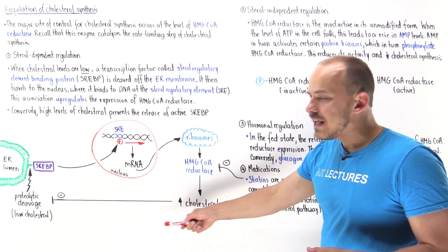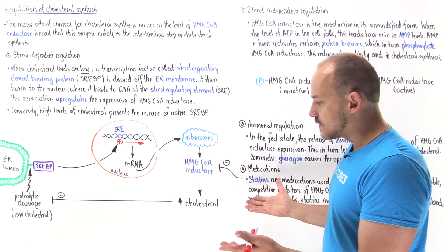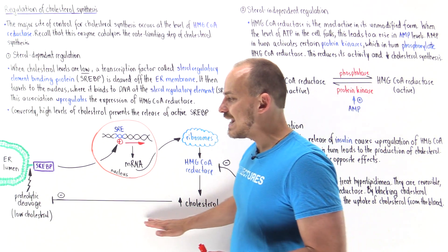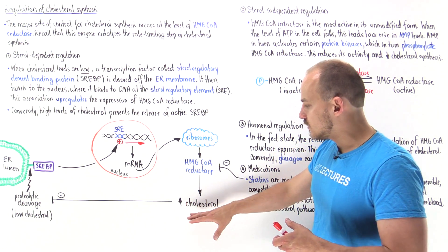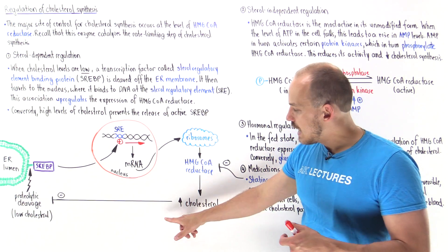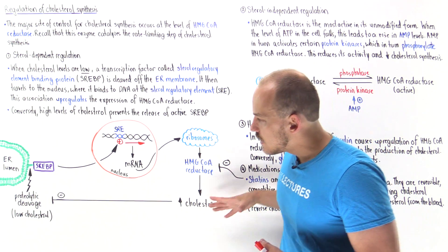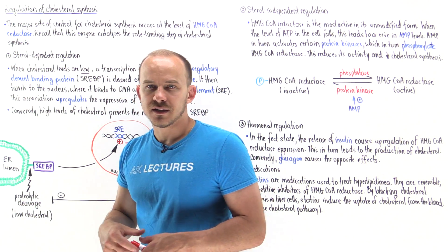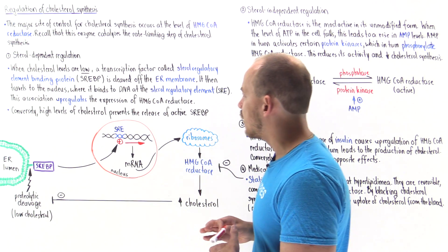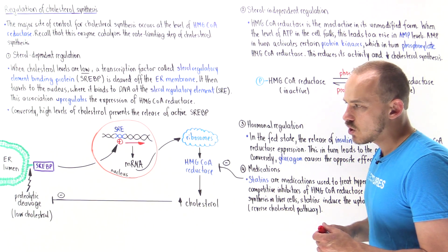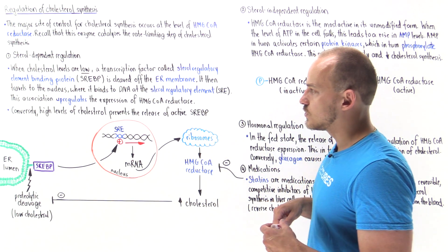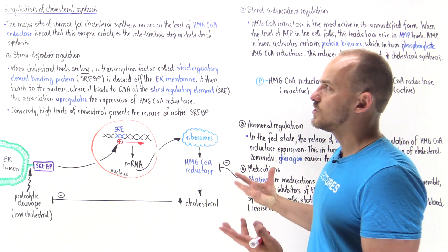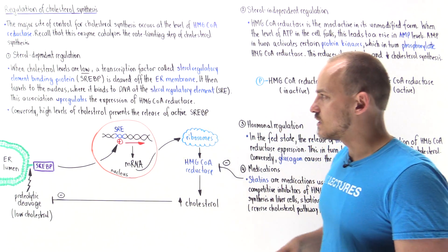When we have high levels of cholesterol, when we synthesize enough, this creates a negative feedback loop. Essentially there are intermediates in the cholesterol biosynthesis pathway as well as cholesterol itself that moves back here and inhibits the proteolytic cleavage of the sterol regulatory element binding protein. This will decrease the production of cholesterol. This is the major way by which we can regulate cholesterol synthesis.